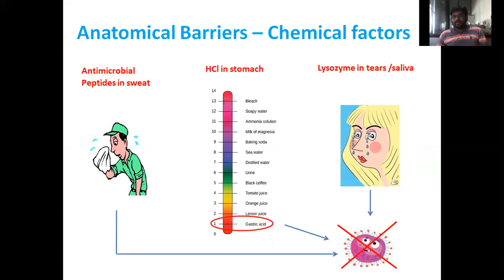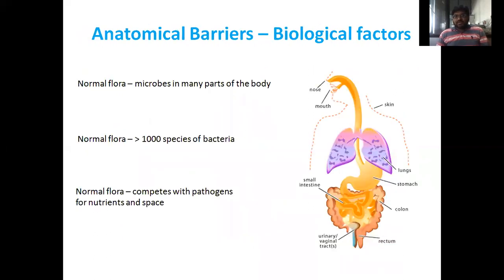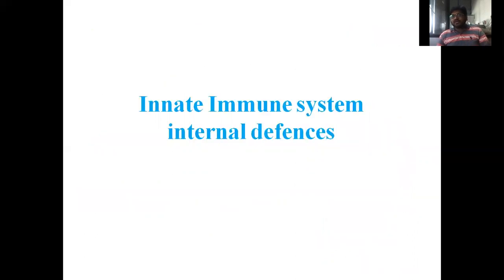Anatomical barriers also include biological factors such as normal flora — microbes present in many parts of the body. They are not harmful pathogens but are present on body surfaces. There are more than 1,000 species of bacteria in normal flora present in our body, and they compete with pathogens for nutrients and space. This is an external factor that acts as an anatomical or physical barrier.